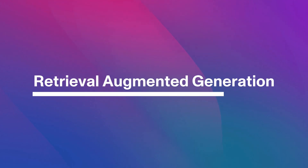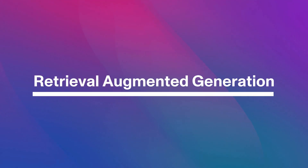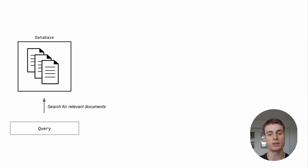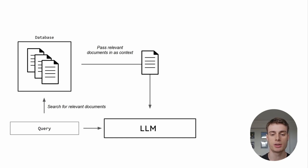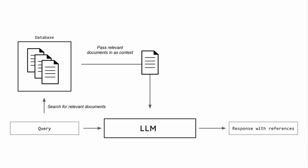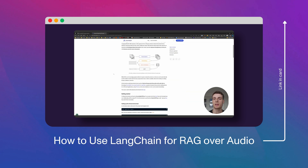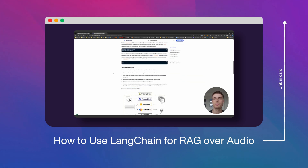Retrieval augmented generation is a technique to increase the relevance and transparency of large language model responses. This approach leverages the strengths of retrieval systems in accessing factual and specific knowledge, and combines it with the creative and contextual understanding capabilities of generative models. Take a look at Ryan's video here to learn how to use RAG on audio files.